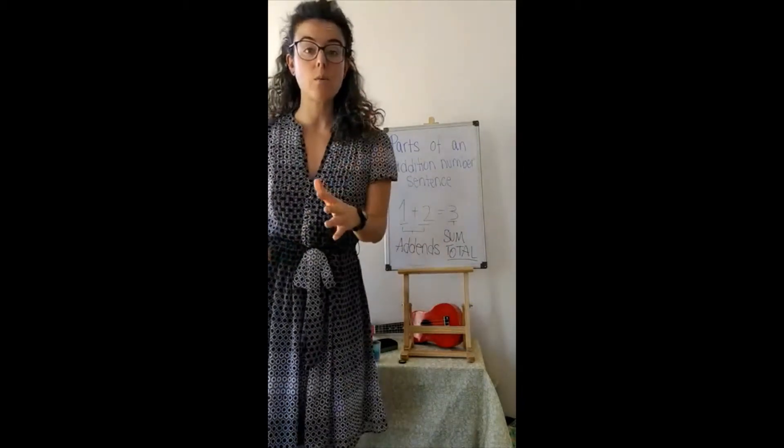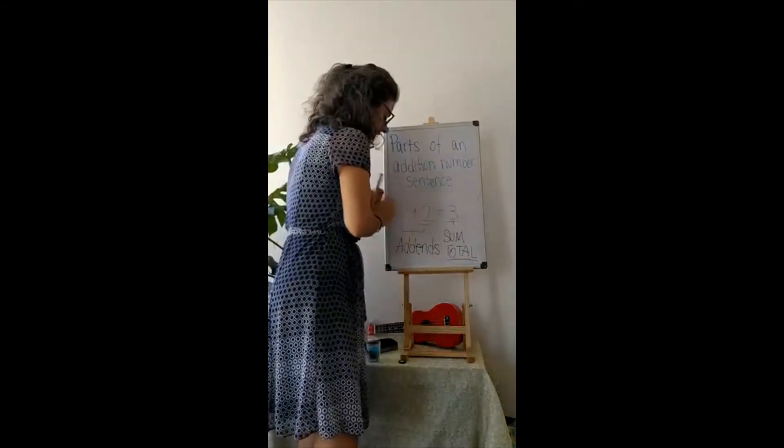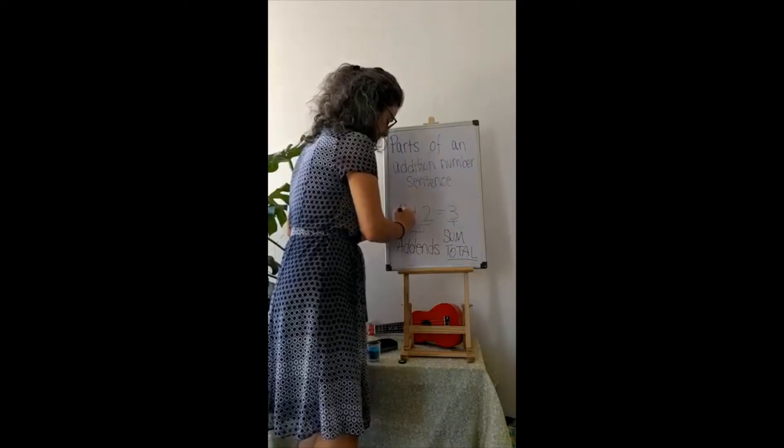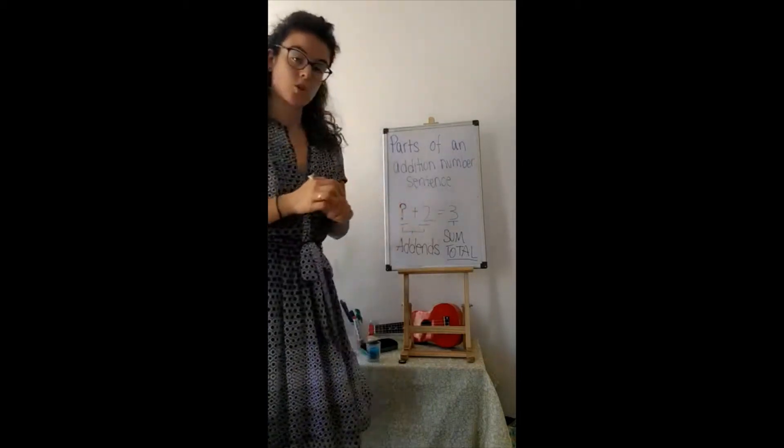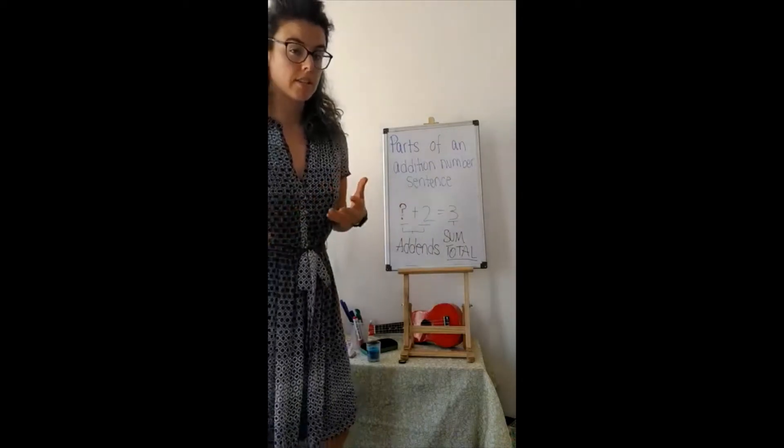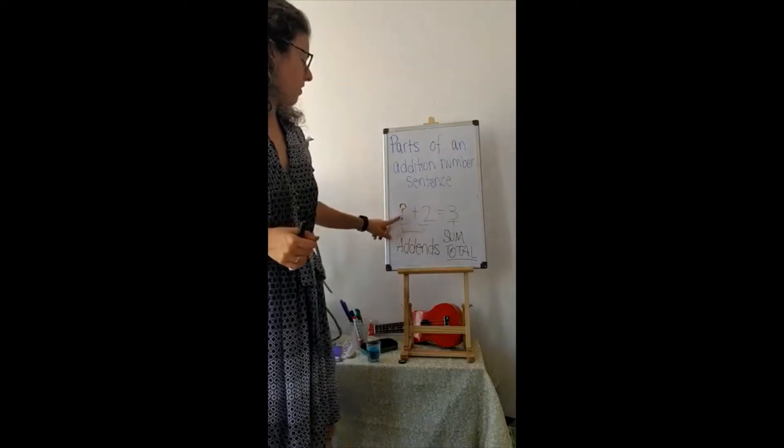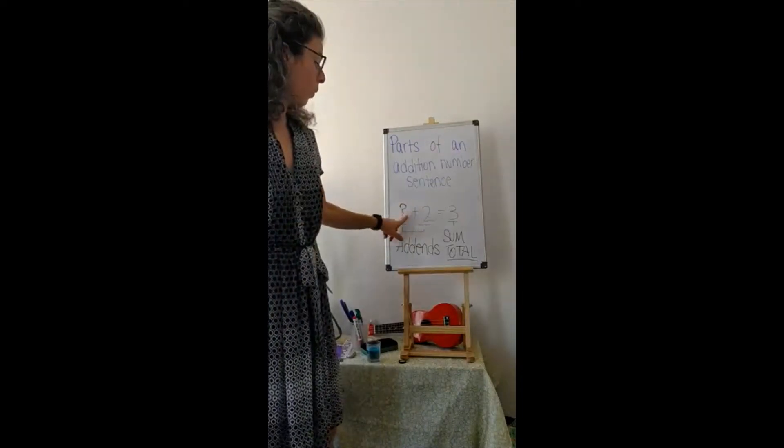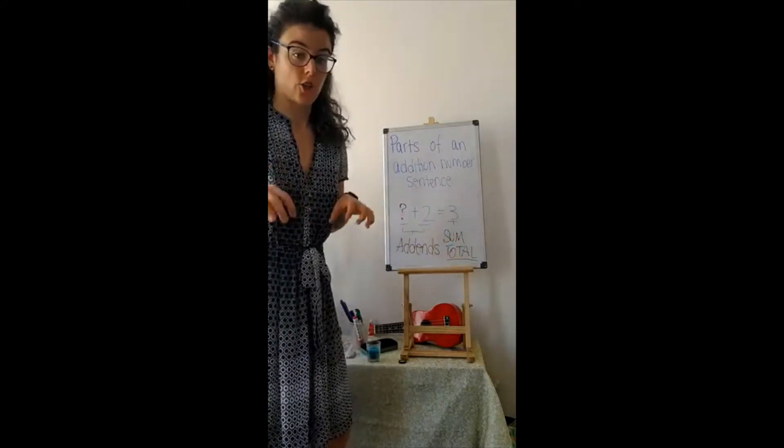So today we're going to use subtraction to help us when we are missing an addend. So sometimes you're going to see number sentences that look like this. Where this number, or this number, one of these is missing. Dun dun dun!